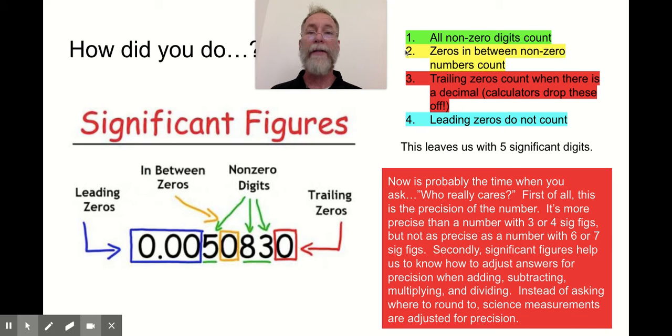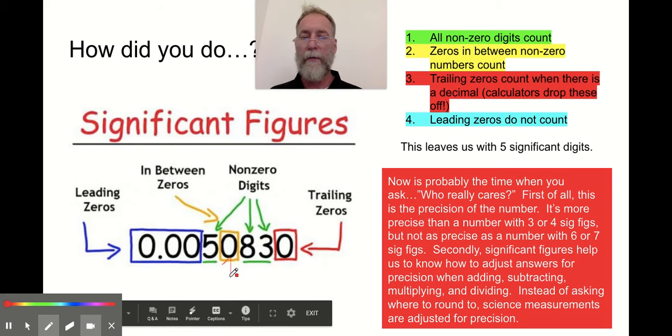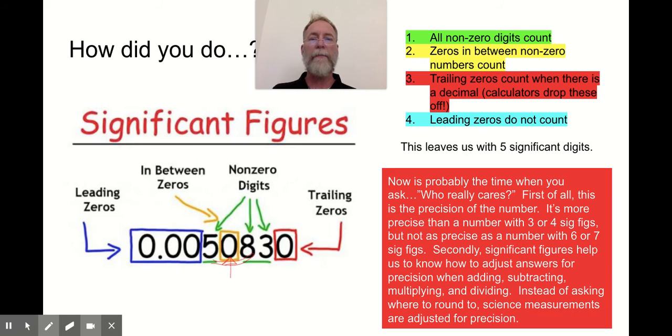Number two, zeros in between non-zeros count. So that's that zero. Let's put on the old pen here. That's that zero right there. It's caught between the five and the eight. It had to be measured if it's between those two numbers. Trailing zeros count when there's a decimal. That means that's a trailing zero. In other words, somebody measured it specifically enough to say after this three, there needs to be another measurement spot.